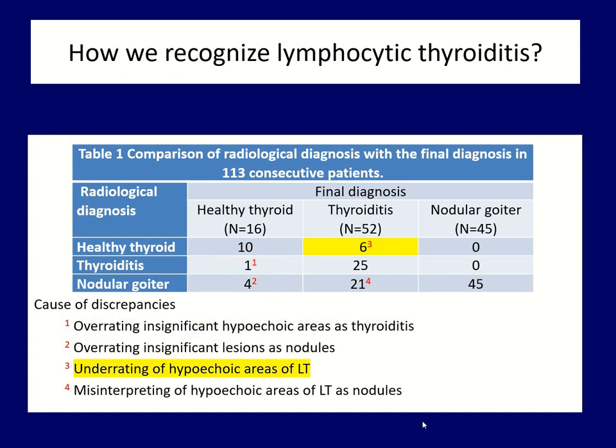Looking at patients whose final diagnosis was lymphocytic thyroiditis: in six patients, the hypogenicity of the thyroid was overlooked. The radiologist is conditioned to recognize potentially cancerous lesions. However, in contrast to, for example, breast imaging, significantly fewer discrete thyroid lesions share oncological importance. On the other hand, the basic echogenicity has huge relevance in the thyroid — a feature the radiologist pays much less attention to. Both in terms of occurrence and clinical importance, the most important discrepancy was the overestimation of discrete lesions of thyroiditis. More than half of lymphocytic thyroiditis cases were missed or misinterpreted by radiologists.